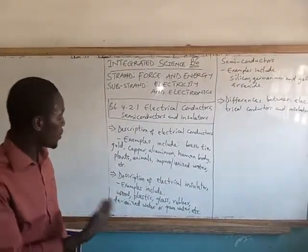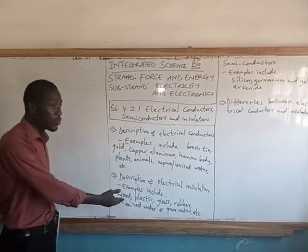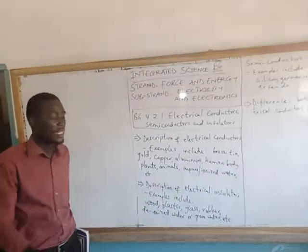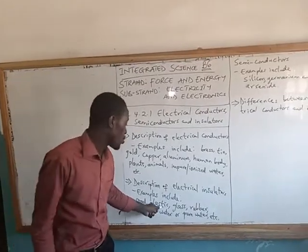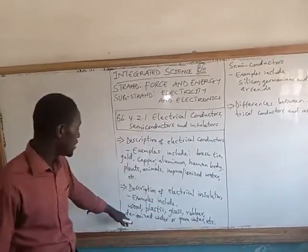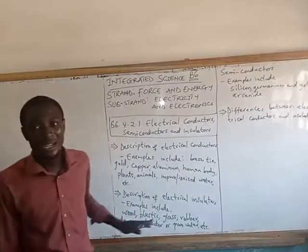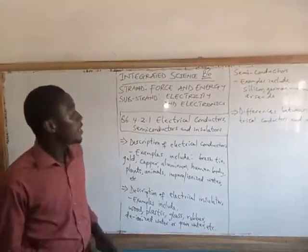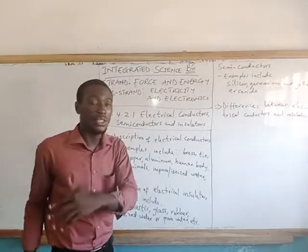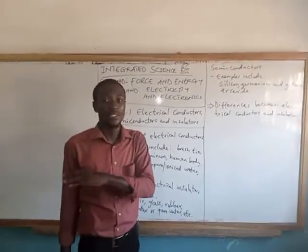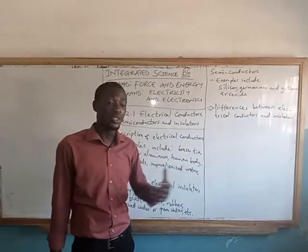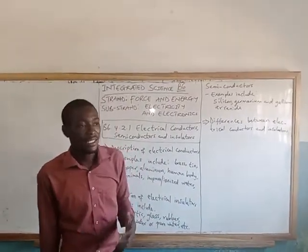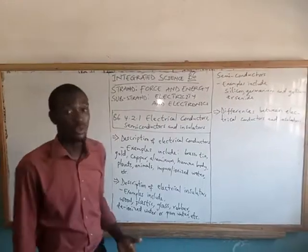Examples of these insulators include wood — wood does not allow electricity to pass through it because it lacks electrical charge carriers. We also have plastic, glass, rubber, and deionized water — that is, pure water without any ions. There are many more included in the lesson notes I have on the platform, so you can go there and read through. I also urge you not to limit yourself to only that — research and get more information, and ask me questions on the platform, which I will answer.